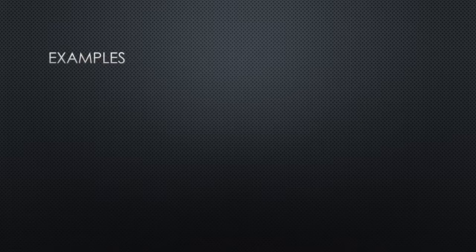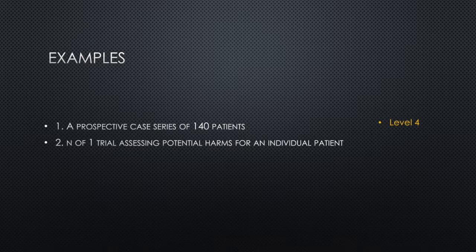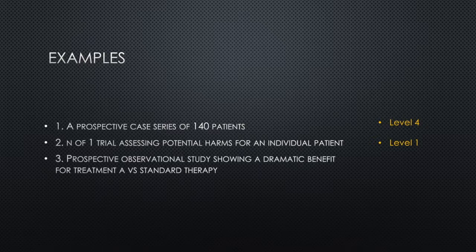Let's look at a couple of examples to gauge your understanding. First: a prospective case series of 140 patients — what level of evidence would that constitute in the new table, assuming this is a study looking at treatment benefits? That would be level 4. Next: an N of 1 trial assessing potential harms for an individual patient — that would now be level 1 for that individual patient. Final example: a prospective observational study showing a dramatic benefit for treatment A versus standard therapy — according to the new evidence table that would be level 2, whereas on the old table it would still only be a level 4.